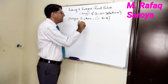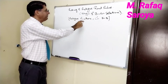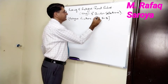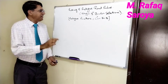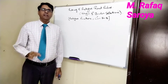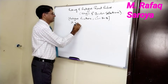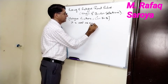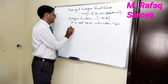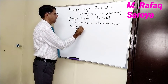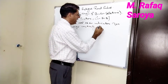Fatigue cracking is studied by the fatigue factor known as G-star multiplied by sine delta. It is written as: fatigue factor equals G-star divided by sine delta. This factor has been given by the SHRP Superpave specification and is used as an indicator factor for fatigue cracking.